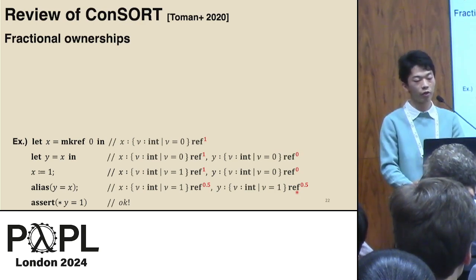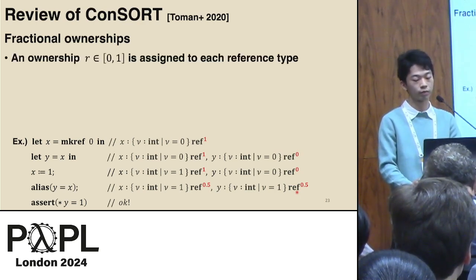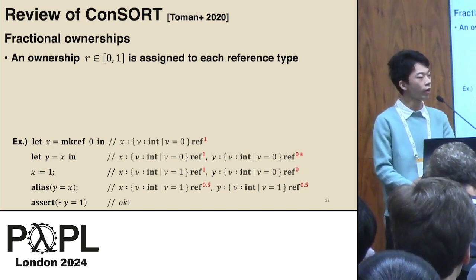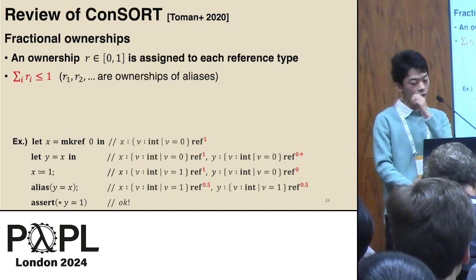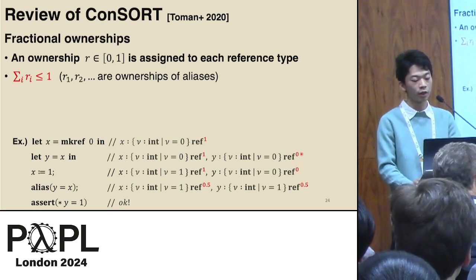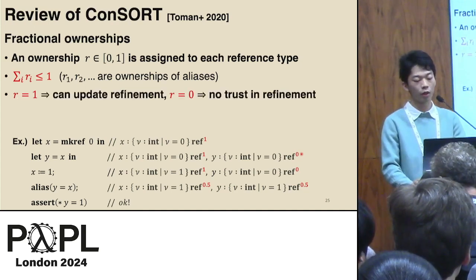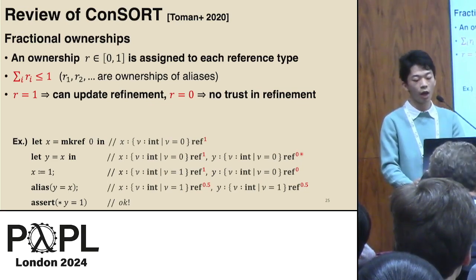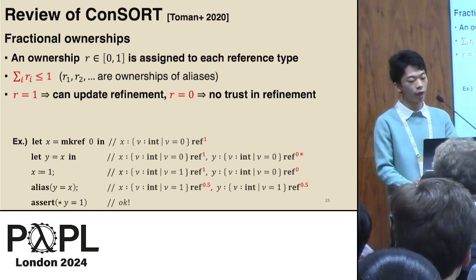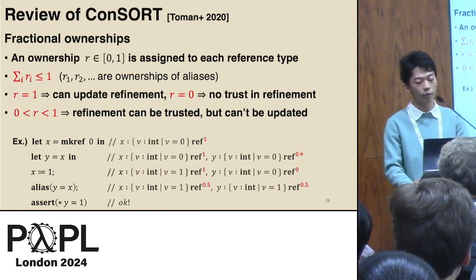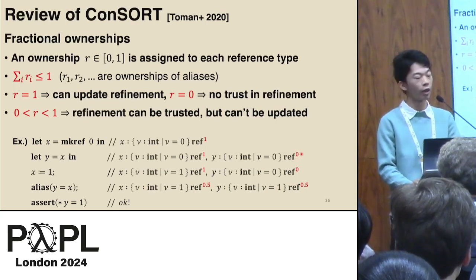Let me summarize the notion of fractional ownership in consort. An ownership is a real number between 0 and 1 which is assigned to each reference type. When aliases are created, we maintain the invariant that the sum of ownership for the aliases is at most 1. The ownership 1 represents full access to the reference, so that the refinement type can be updated. 0 means no ownership, so the refinement type information cannot be trusted. An intermediate value between 0 and 1 means that refinement can be trusted but cannot be updated.